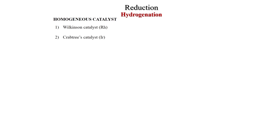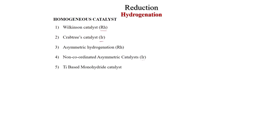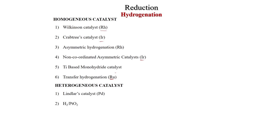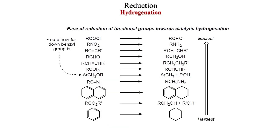Regarding homogeneous catalysis: Wilkinson's catalyst (rhodium-based) and Crabtree's catalyst (iridium-based), asymmetric hydrogenation with rhodium-based catalysts, non-coordinating asymmetric catalysts, iridium-based and titanium-based monohydride catalysts, and transfer hydrogenation with ruthenium will be discussed. For heterogeneous catalysis, we will discuss Lindlar's catalyst (palladium), H2/PtO2, H2/Pd-C, Rosenmund reaction, and Raney nickel. Going from top to bottom, the functional groups become harder to reduce — benzene is the hardest because it is aromatic.